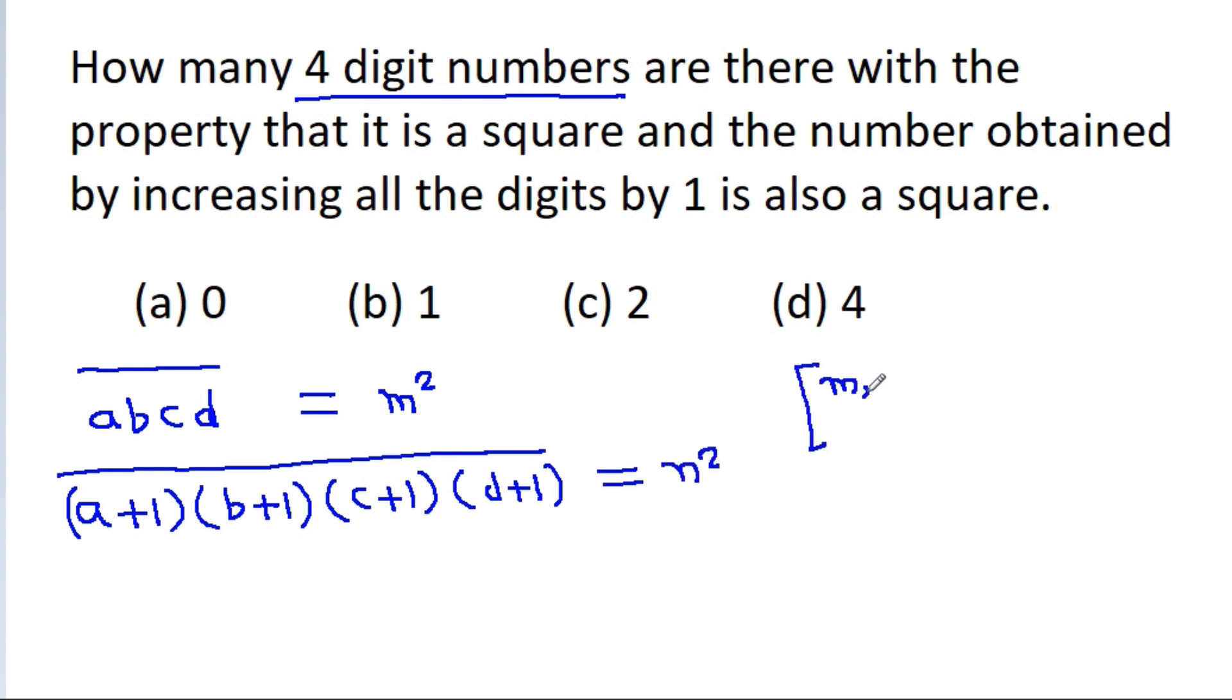Where M and N are any positive integers. For example, if 2304 is M squared, then 2 plus 1 is 3, 3 plus 1 is 4, 0 plus 1 is 1, and 4 plus 1 is 5, it must be equal to N squared.